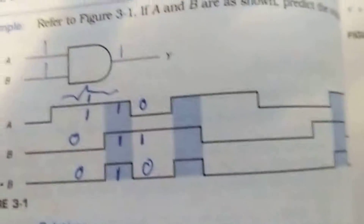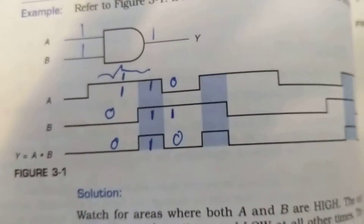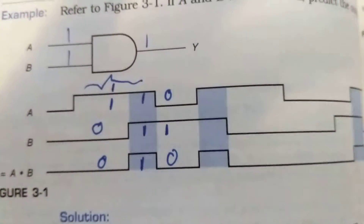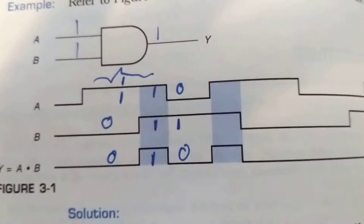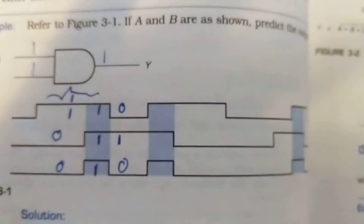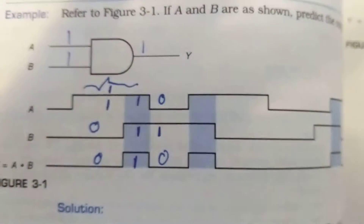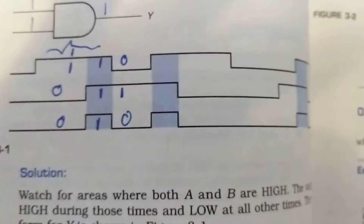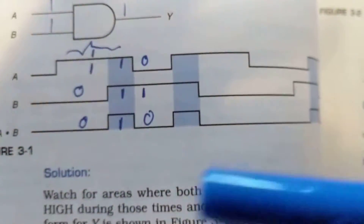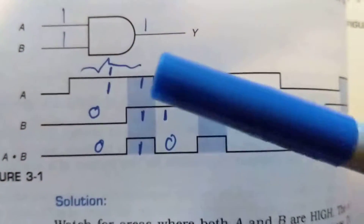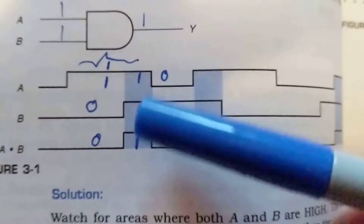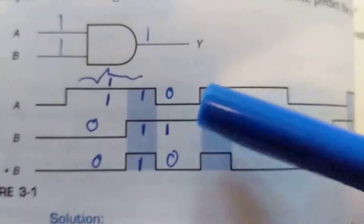Hello everybody, again Joseph with another tutorial. Digital electronic gates — we discussed before about AND gates and NAND gates. Today we're going to do something a little different called waveform analysis. With respect to waveforms, inputs and outputs, you're going to see the waveforms as highs or lows and determine the output.